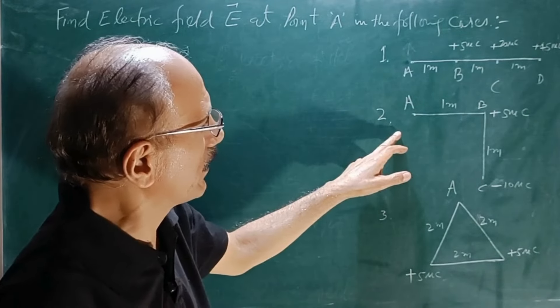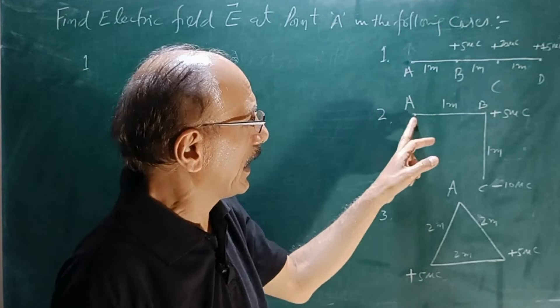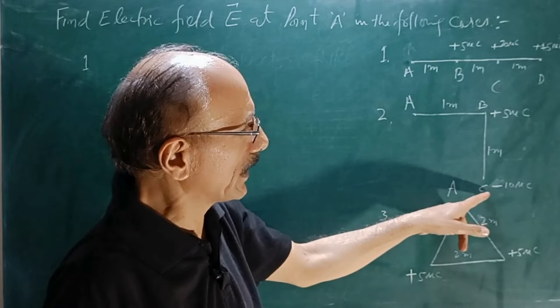In question number 2, here is point A where you have to find the electric field at A due to charge B and due to charge C.